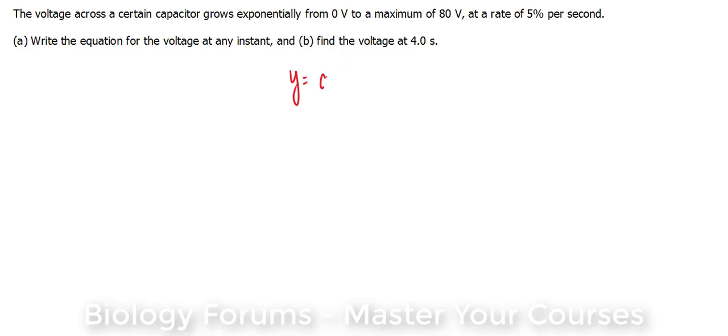This is the exponential decay formula: y equals a times e to the power of negative nt. In an upper limit problem, we end up with the following formula: y equals a, which is your upper limit, minus the decay.